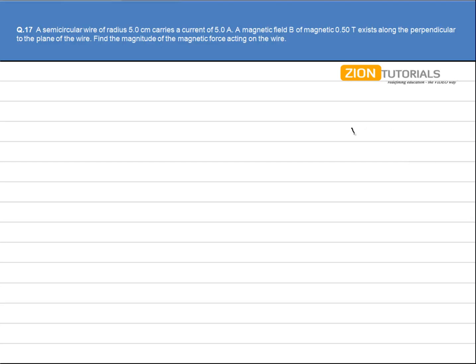Now let's say this is my magnetic field and semicircular wire is like this. Now the force is given by i dl x B.